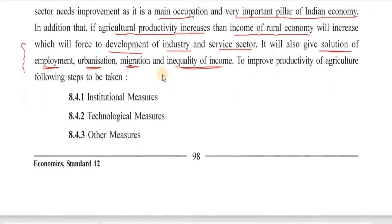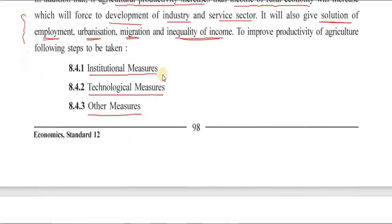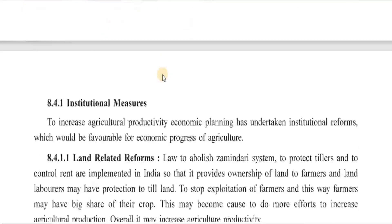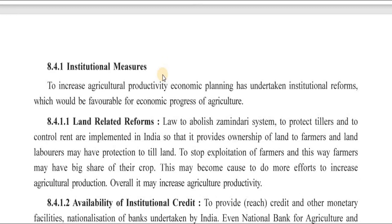The solution lies in developing agriculture and developing industries. To increase productivity, we can divide measures into the following three main categories: institutional measures, because institutional factors are responsible for low productivity; technological measures; and other measures. So let us talk about institutional measures.